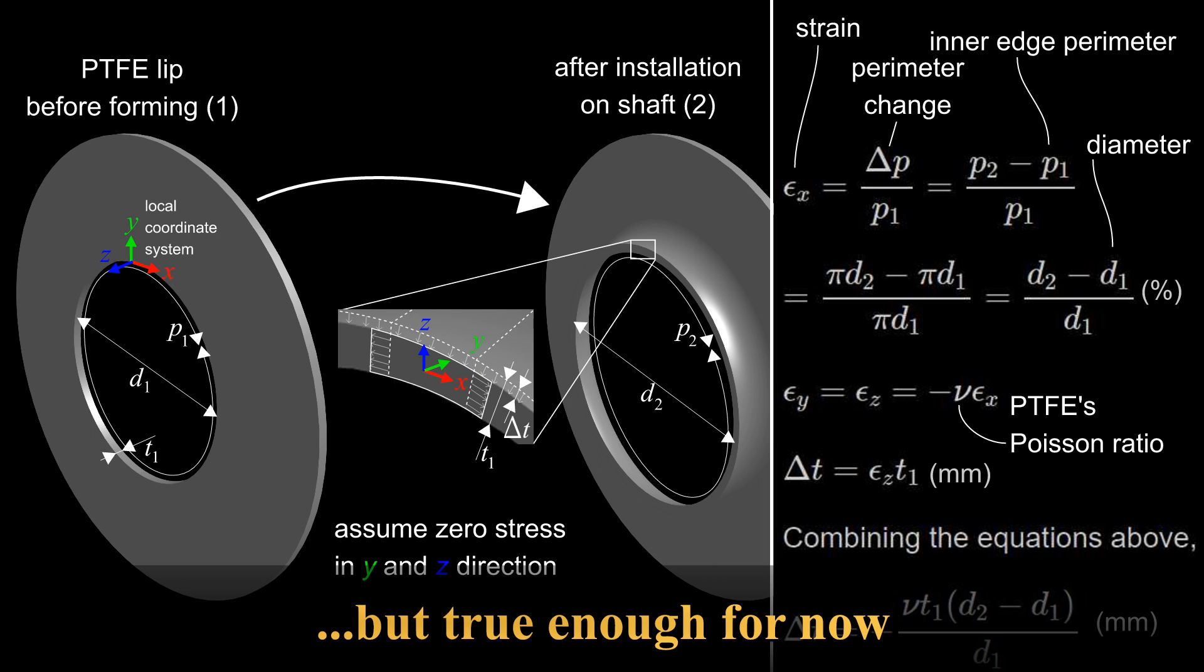Finally, the corresponding thickness decrease is calculated by multiplying epsilon z by the initial thickness. Combining the above yields the equation at the bottom.